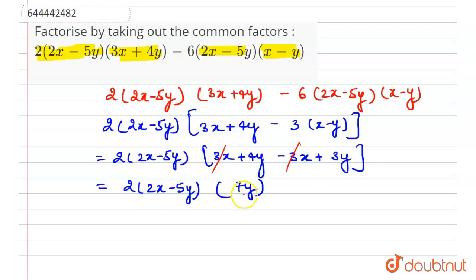We will multiply this 7y into 2. So we have 14y(2x - 5y) as the factor of this complete equation.